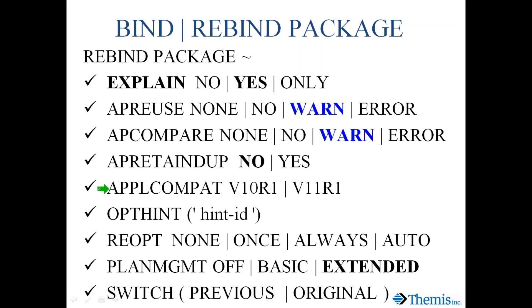Application compatibility: in version 11 we need to be cognizant of whether we're binding under version 10 rules or creating access paths for version 11 new function mode. Don't switch to version 11 until you are actually in version 11 new function mode. Don't forget in explains: if you re-optimize, the access path may not be what was in the bind package. Make sure you have the explain tables available and analyze the columns associated with that.